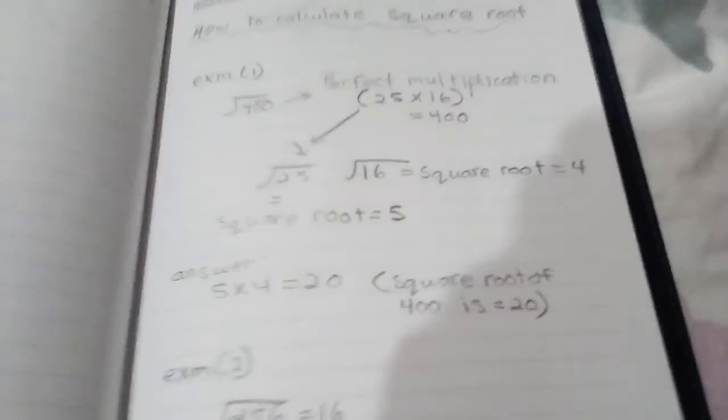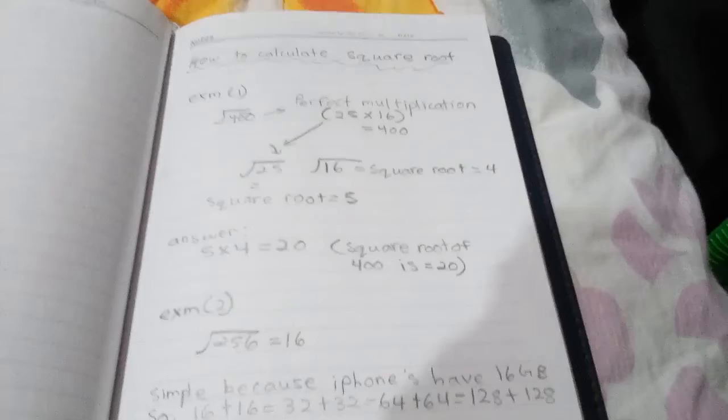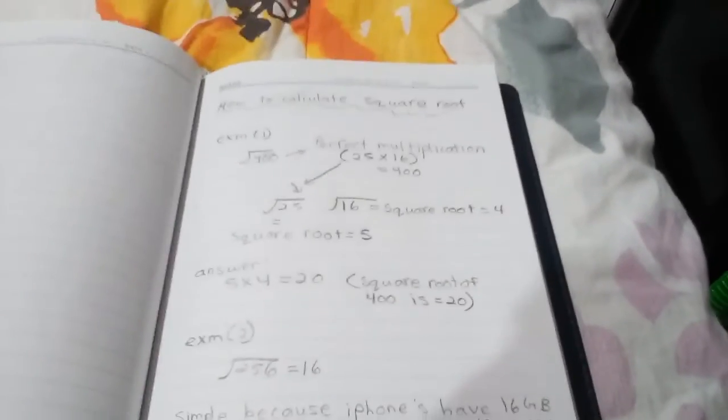Next, you have to times it 5 times 4, so equals 20. You can check it in your calculator and it will be 20. So the square root of 400 is 20. That's a simple method of how to calculate a square root.